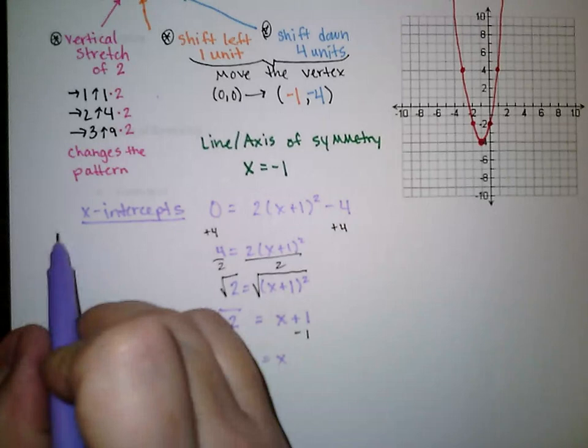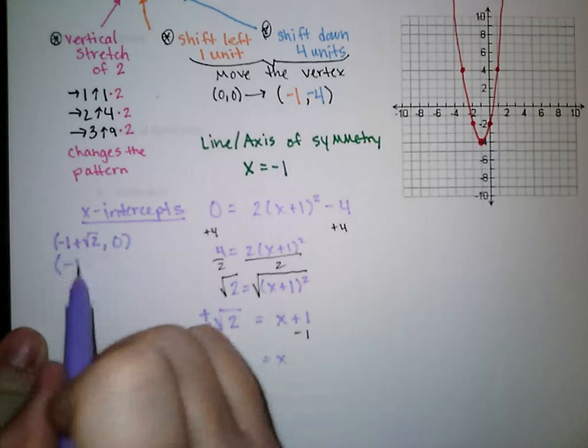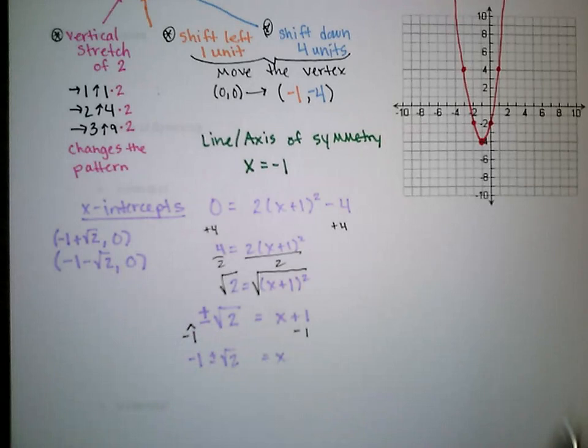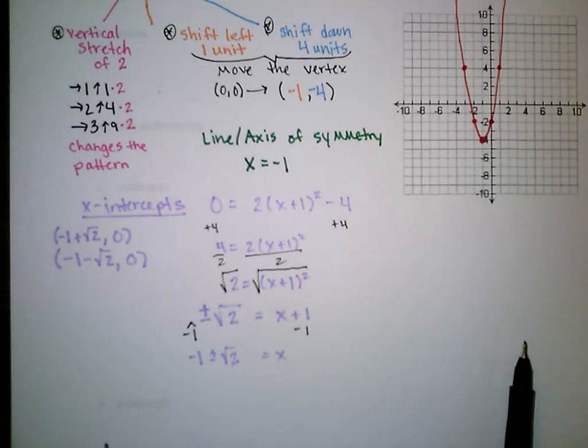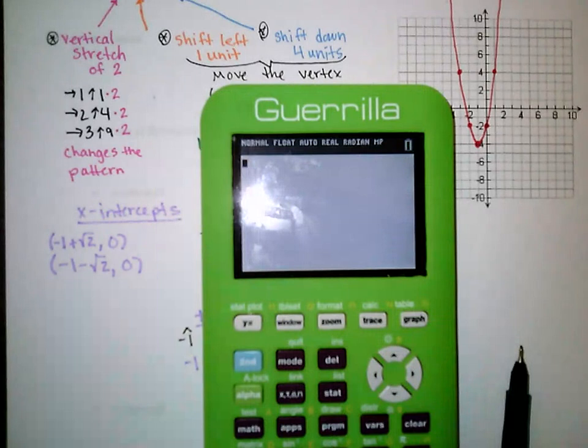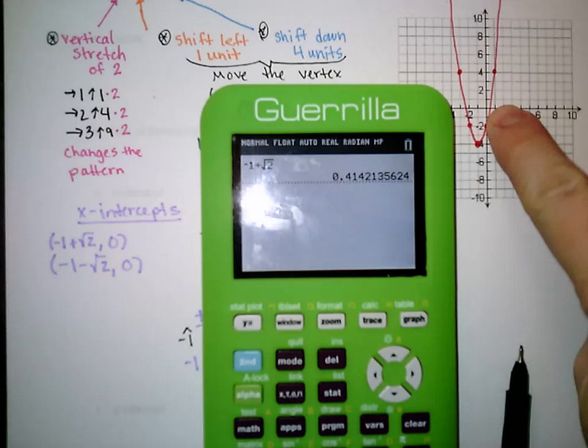If you're going to use those x-intercepts for graphing purposes, you need decimal approximations. Negative 1 plus square root of 2 is approximately 0.4, and negative 1 minus square root of 2 is approximately negative 2.4.